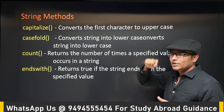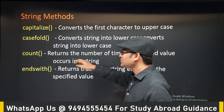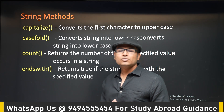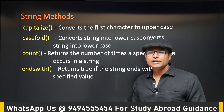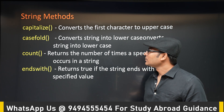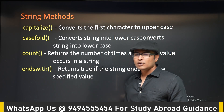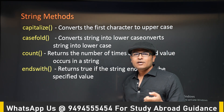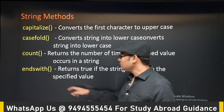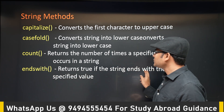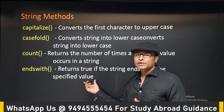Coming to strings, there are various methods available. One method is capitalize — it converts the first character of the string into a capital letter. Next is casefold, which converts the entire string to lowercase. Casefold and lower are essentially the same. Count returns the number of times a specified value occurs in a string. Endswith returns true if the string ends with a specified value.